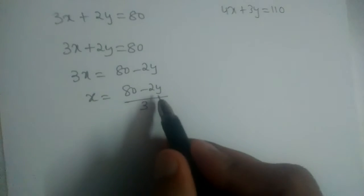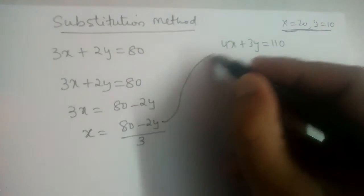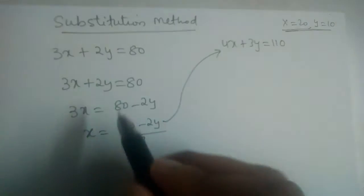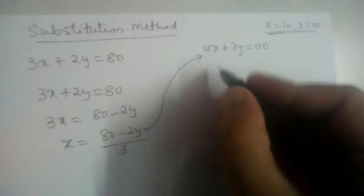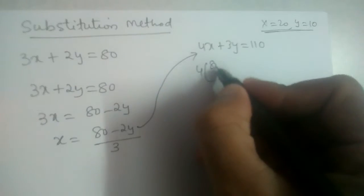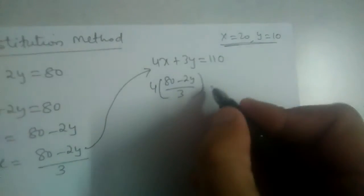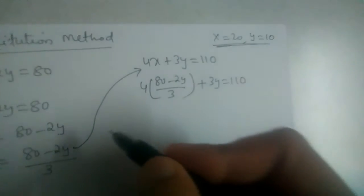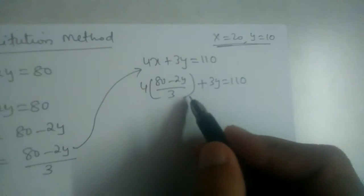This value of x should be substituted in the other equation. Some students forget and substitute it in the same equation — that is wrong. So substituting x = (80 − 2y) / 3 into the second equation gives us 4 × (80 − 2y)/3 + 3y = 110. We have eliminated x from this equation; there is only y now.